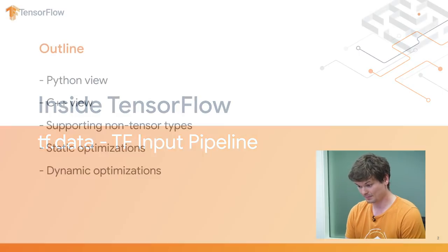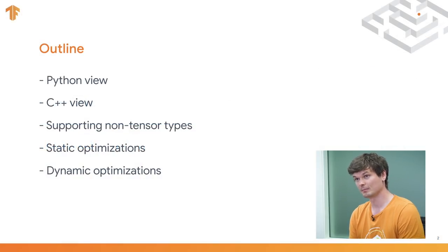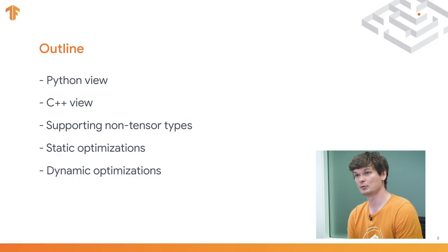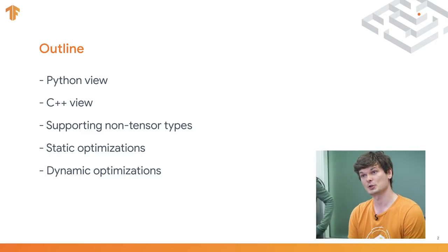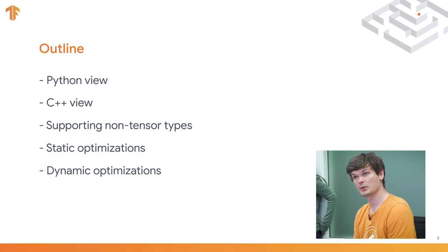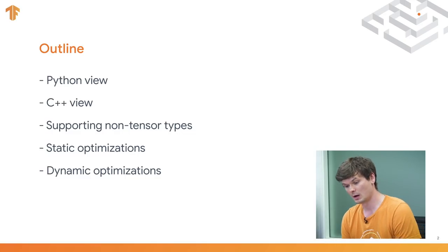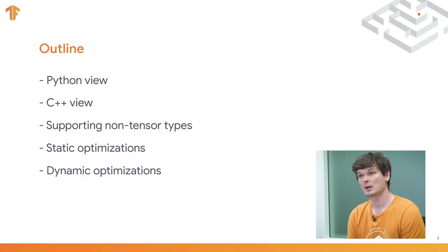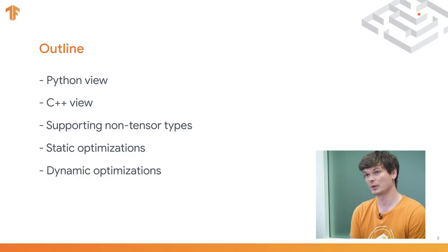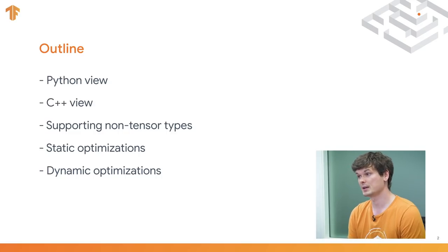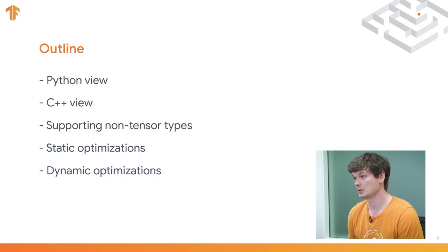In this talk, we're going to cover a couple of topics. We're going to peel the two main layers of TfData's implementation one by one, first focusing on the Python view and then on the C++ view of TfData. And then I'm going to cover three areas of TfData that might be of interest to the broader audience: support for non-tensor types and both static and dynamic optimizations in TfData.